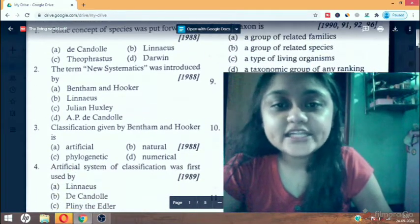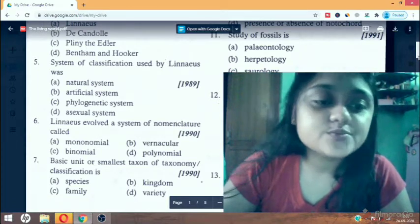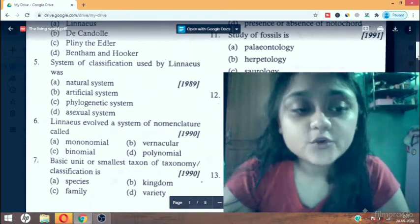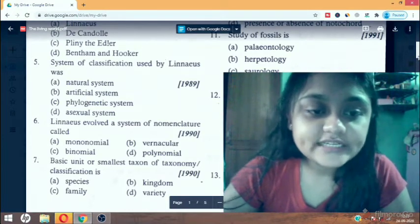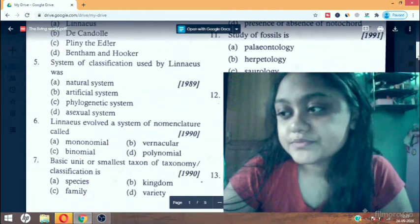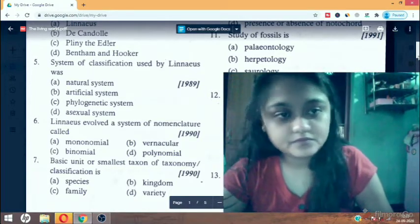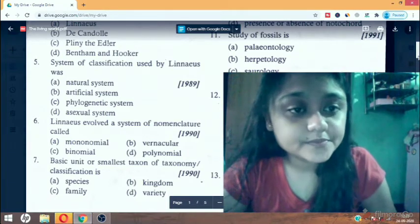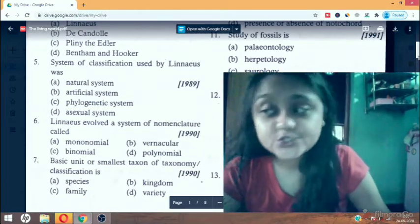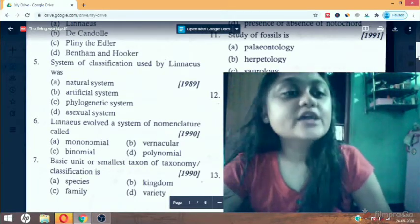Now comes eighth question - Linnaeus evolved a system of nomenclature called. First option is monomial, vernacular, binomial, polynomial. Artificial system of classification used by Linnaeus is based on sexual characters, it is commonly also called as sexual system of plant classification.